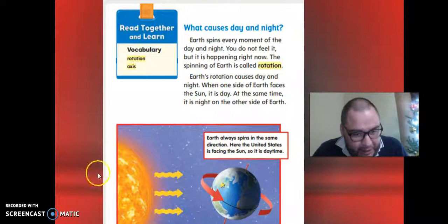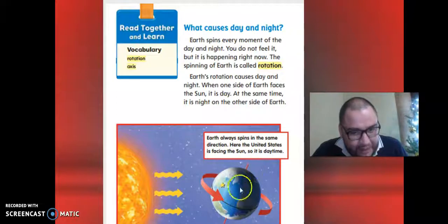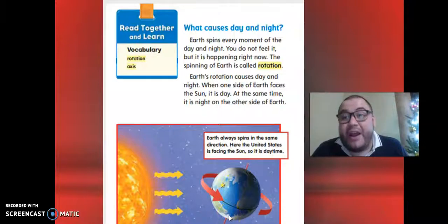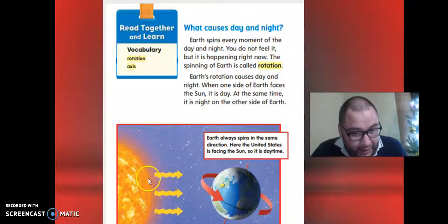The name of this is rotation. Earth rotation causes day and night. Why? Because if you see the picture, in this part here is the axis. The axis is like the half of the pole of the planet. The planet is a sphere.